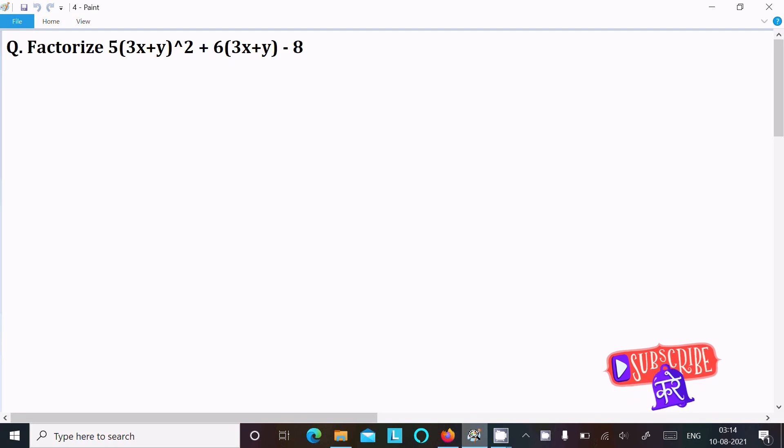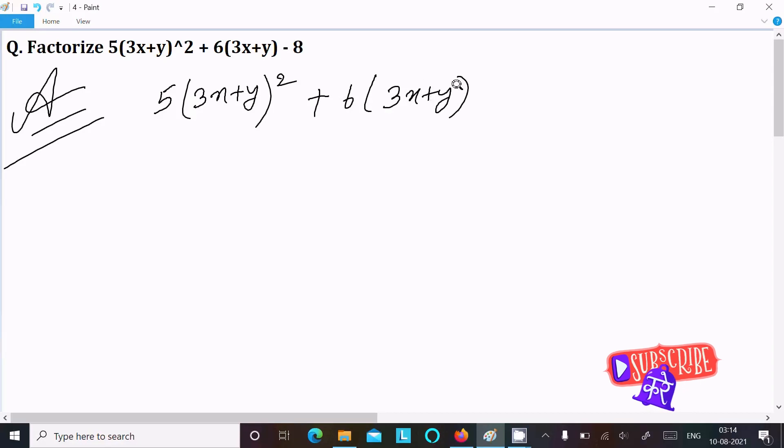In this video lecture I am going to factorize 5(3x+y)² + 6(3x+y) - 8. So let's see the answer. First we are writing the given 5(3x+y)² + 6(3x+y) - 8. We can easily achieve the output if I assume k = 3x + y.